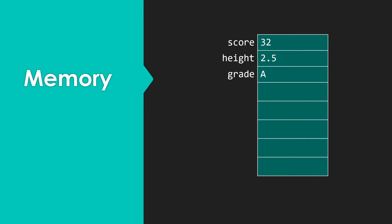And our variables are sections of main memory that we have set aside to hold particular values. So here I have a table that is representing main memory. I have three different variables that I've set up here. Our score with that value 32, height of 2.5 and a grade A.